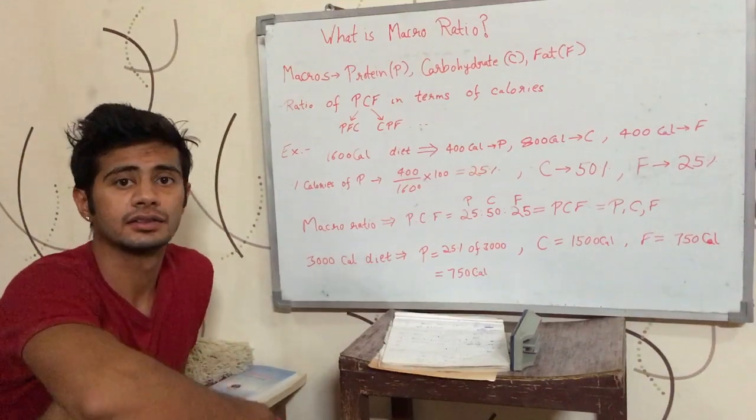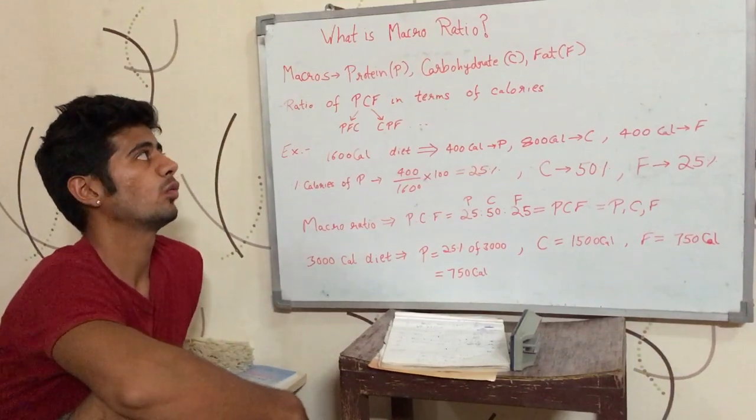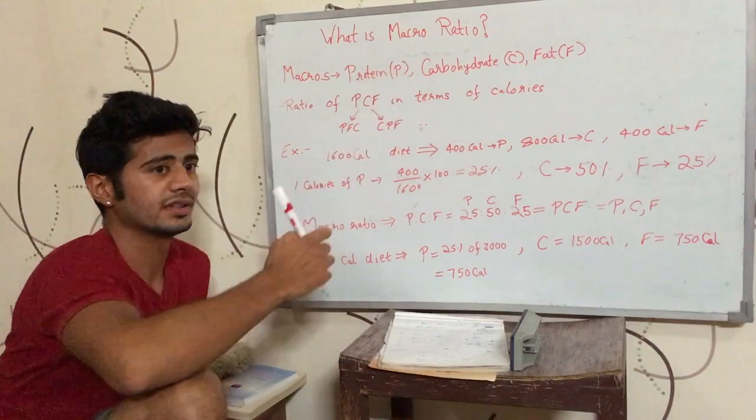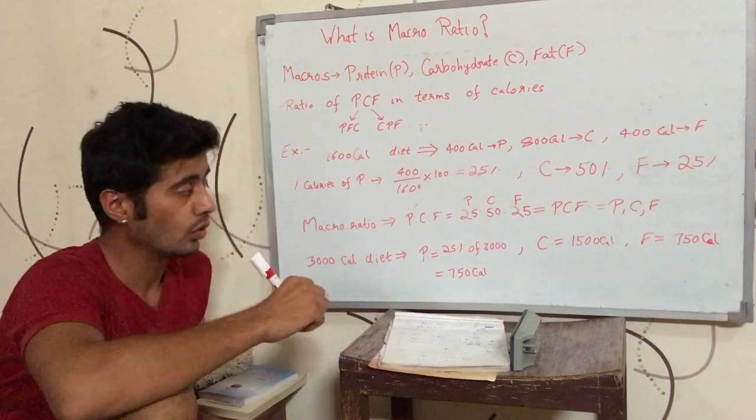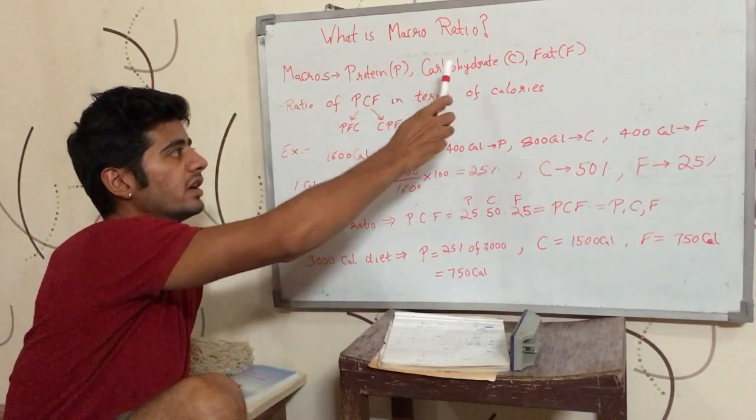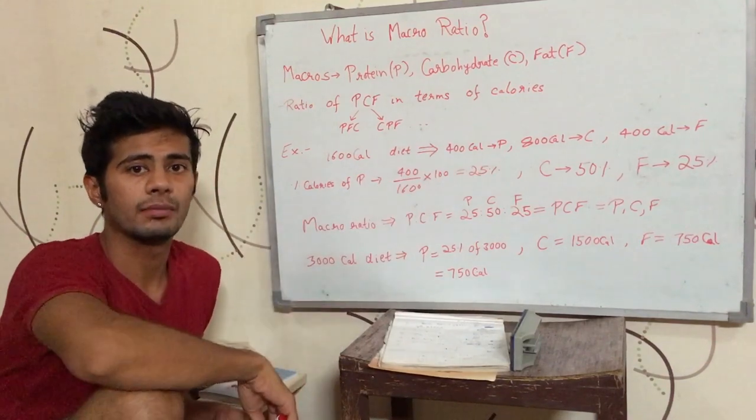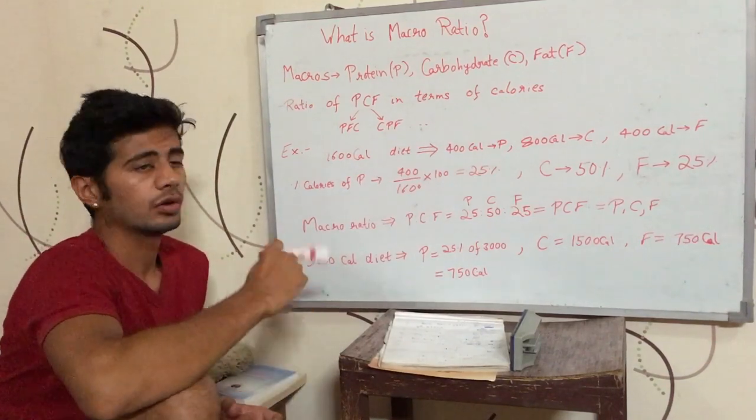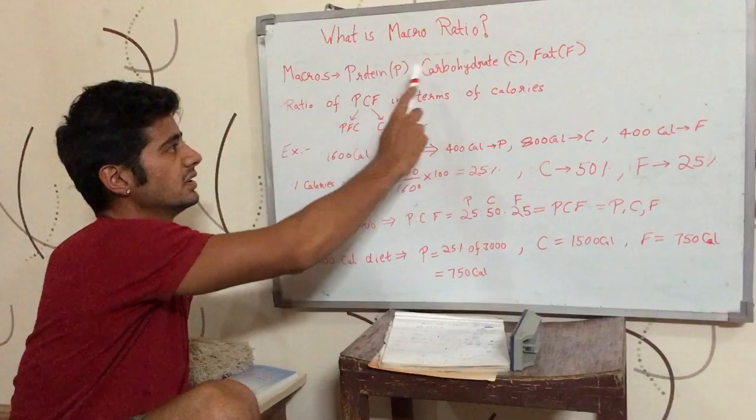Hey, hi guys. This is Sushant. Today we are going to talk about what macro ratio is. Protein, carbohydrates and fats combined are called macros. I have talked about this in my previous video. So, these are macros.